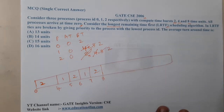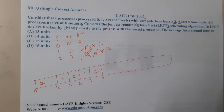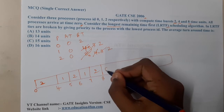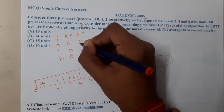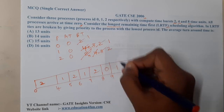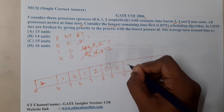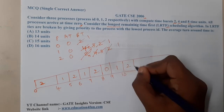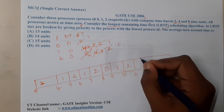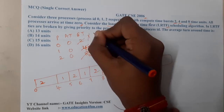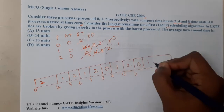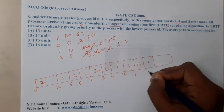Now all processes have equal remaining times, so there is a clash again. Process 0 executes for 1 second, then process 1 executes for 1 second, then process 2 executes for 1 second. Everyone completes one round, then they start the same process again — process 0, then process 1, then process 2.